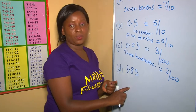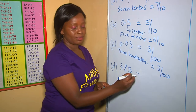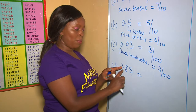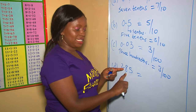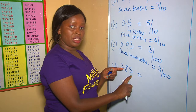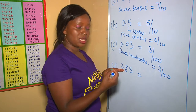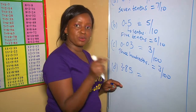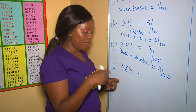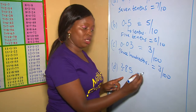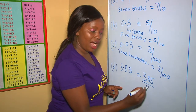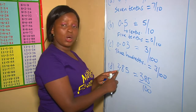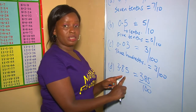This example here, we are given 3.85. When you look at the number of digits after the decimal point, there are two digits: eight and five. Therefore, when we are writing this one as a fraction, our denominator should have two zeros. So this is going to be three hundred and eighty-five out of a hundred. Three is the whole number part, and this is the fraction part of it.